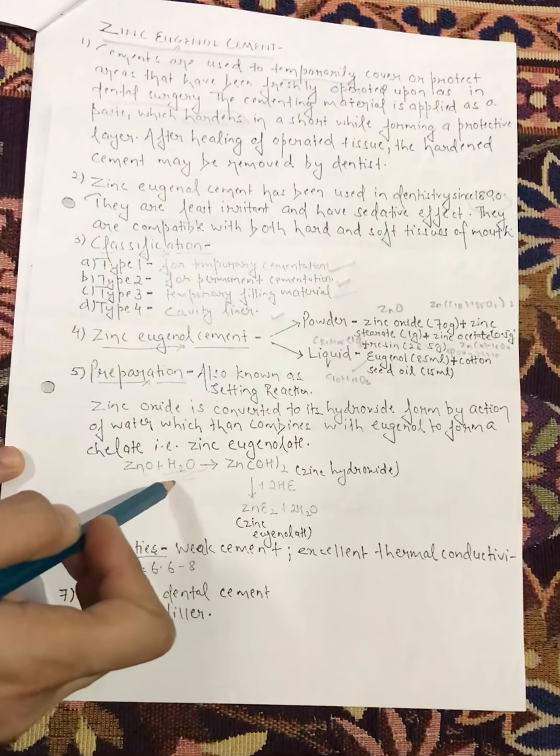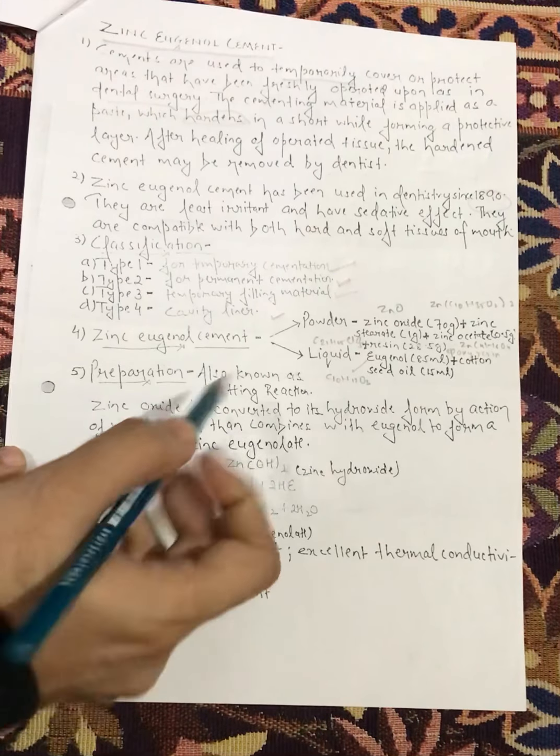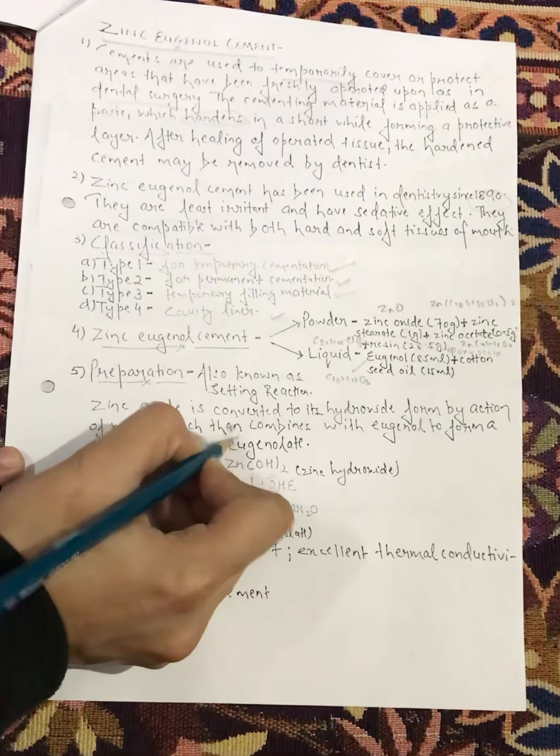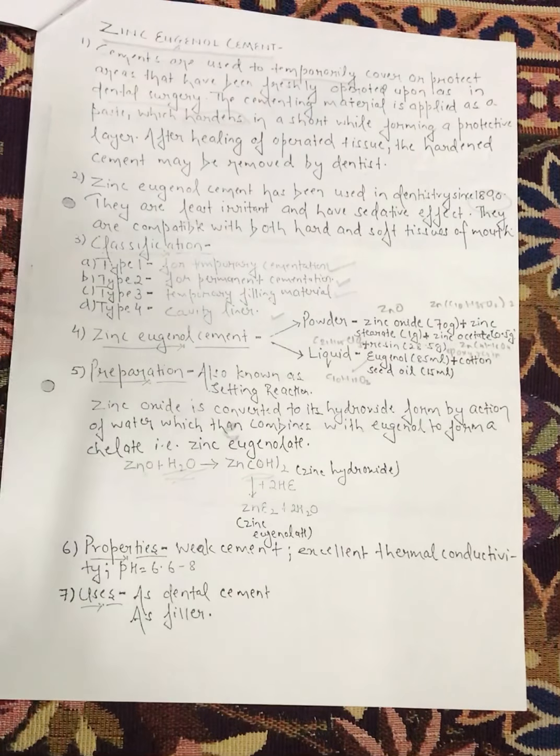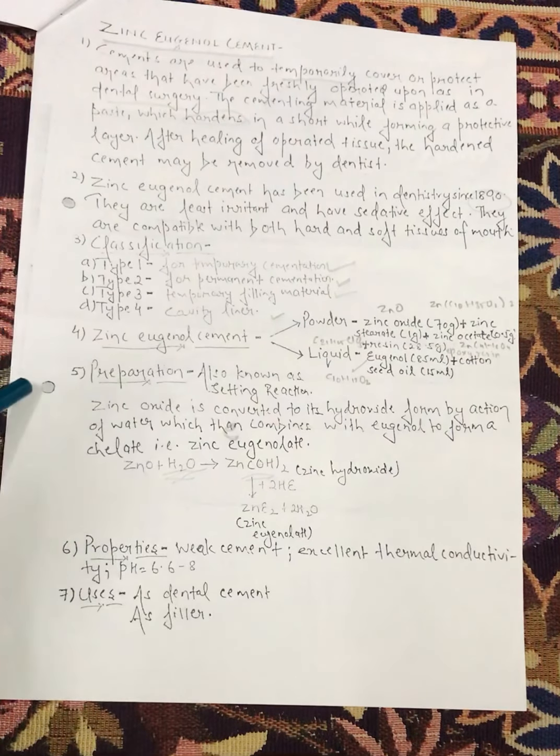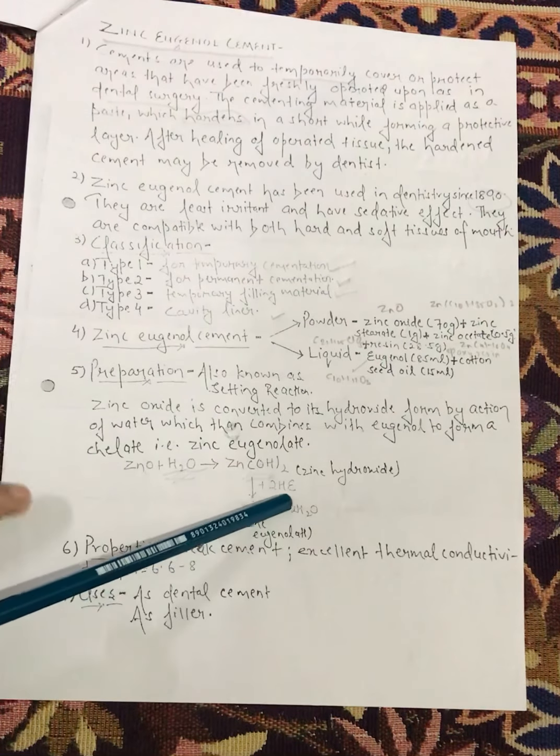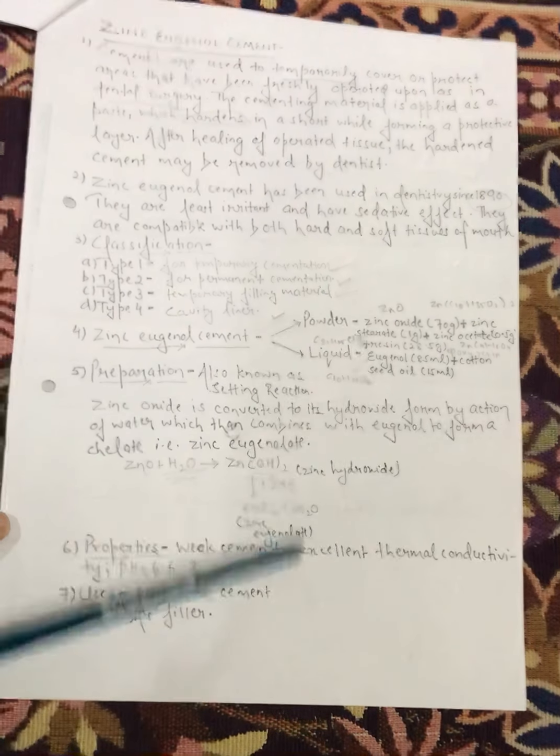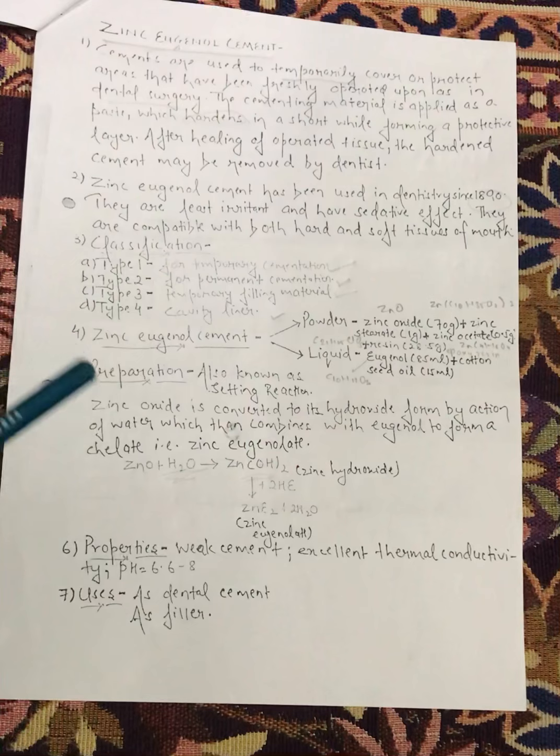Zinc oxide first, we will react with water. So, we will get zinc hydroxide which then combines with eugenol to form a chelate. Now, we have zinc hydroxide but we need zinc eugenol cement, so what do we do? We will react with eugenol that is represented by HE and we will get zinc eugenolate. And what do we remove? Water. So, this is the preparation of zinc eugenolate that is zinc eugenol cement.